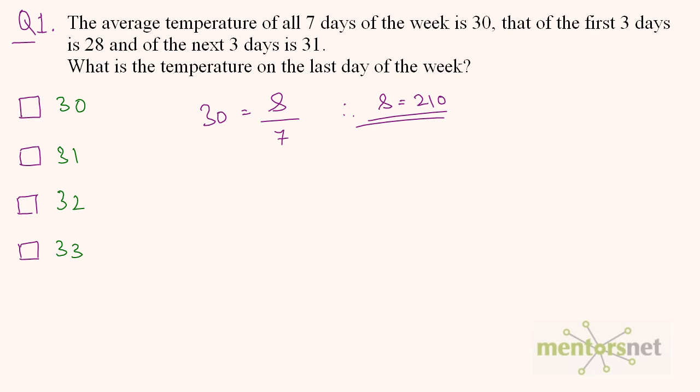Now the average of the first 3 days of the week is 28. So 28 is equal to the sum of temperatures of the first 3 days — let us term it as S1 — divided by 3. Therefore S1 is equal to 28 times 3, which is 84.